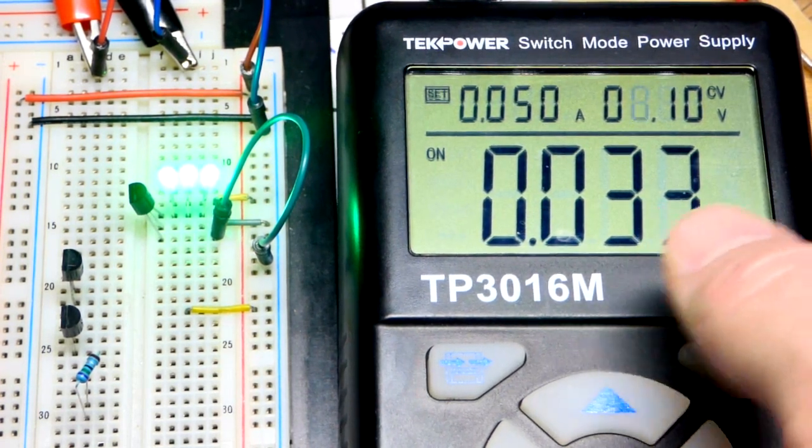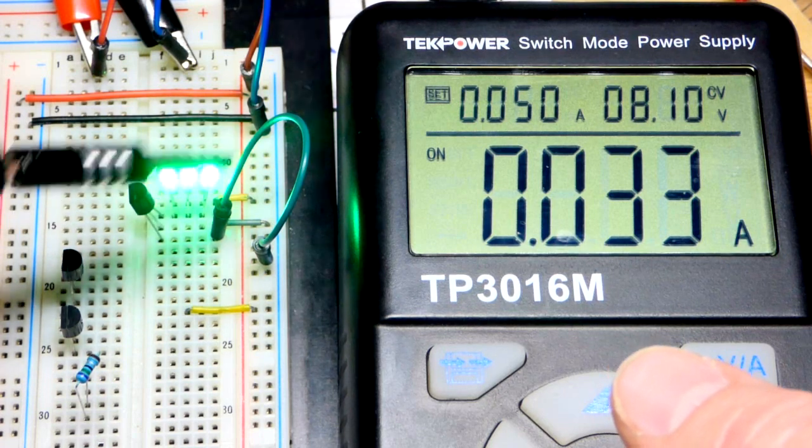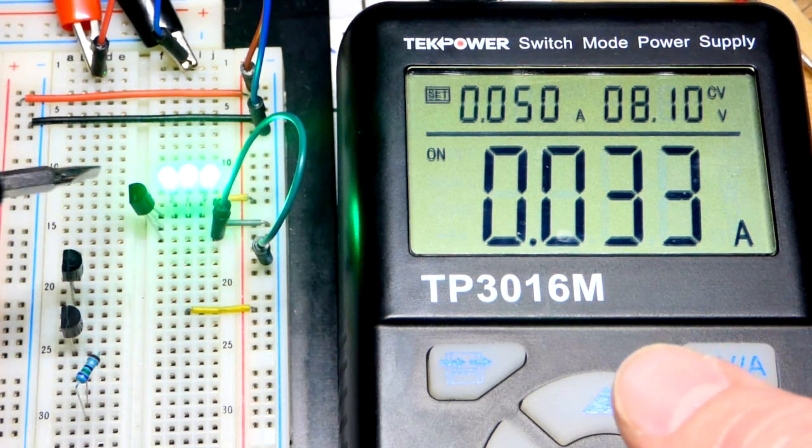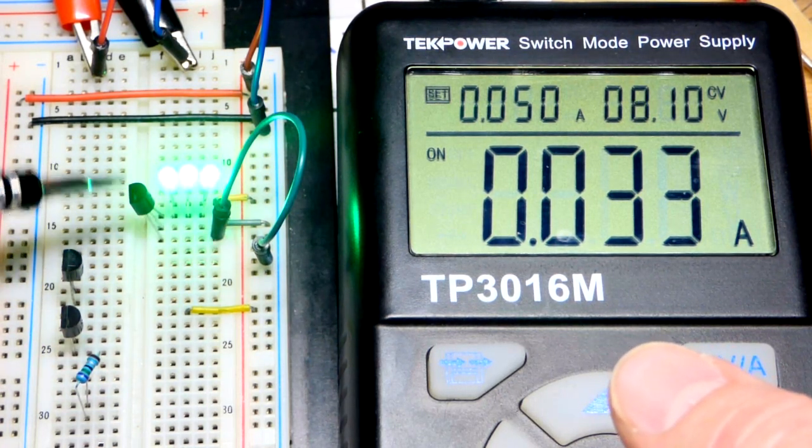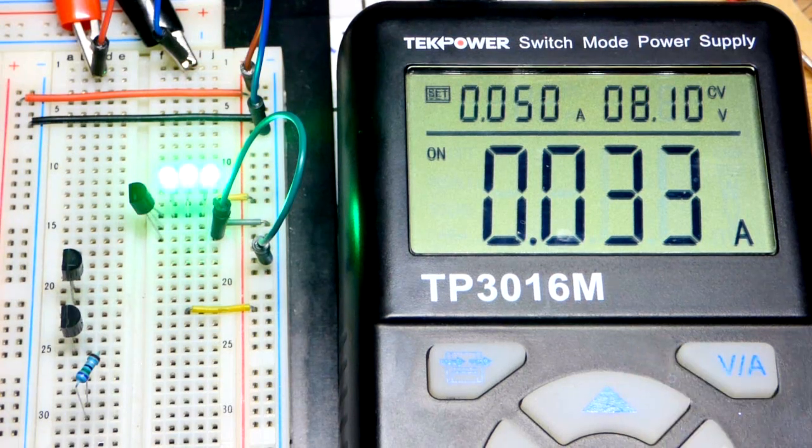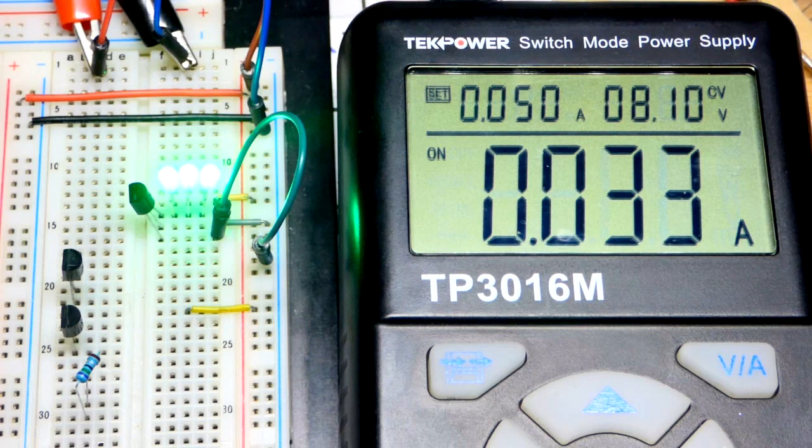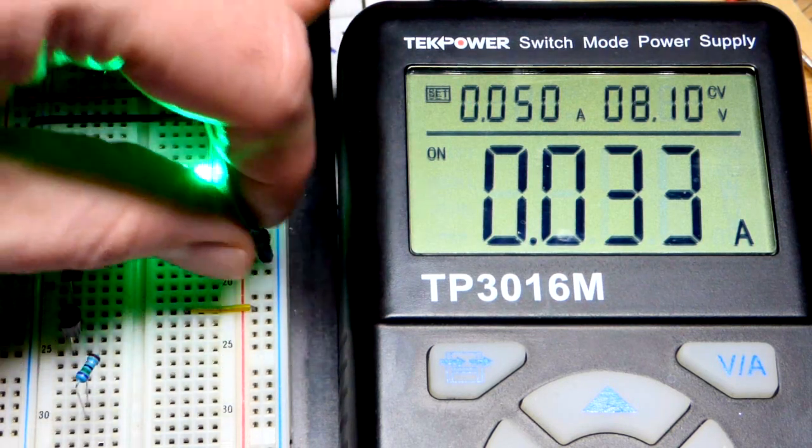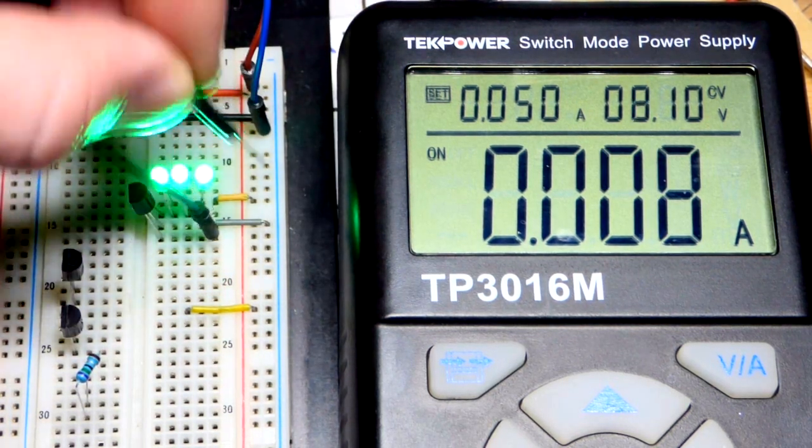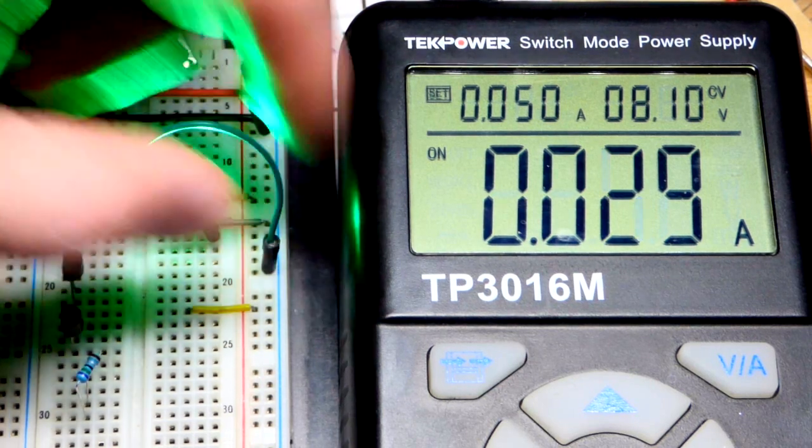Main takeaway is we got a set amount of current when we short that. And that will be the most current that this transistor can provide. So we basically told it, be on as much as you can for the most part. Let's see what happens if I remove that. You can see it goes down. So there you go.